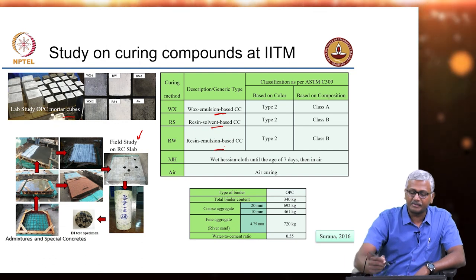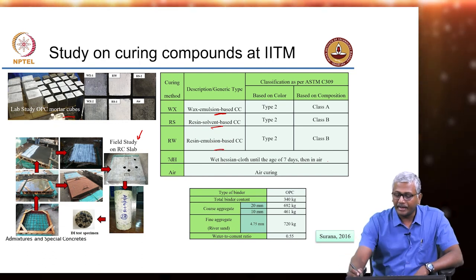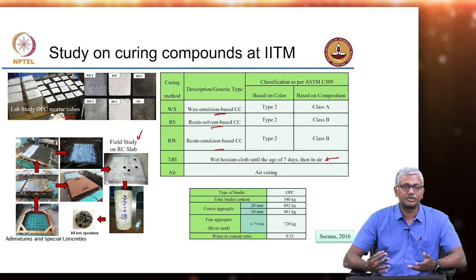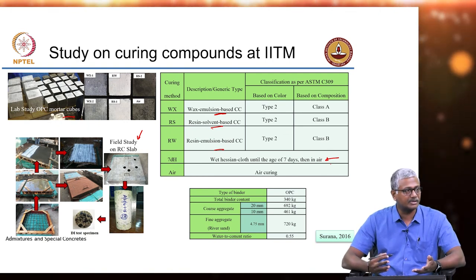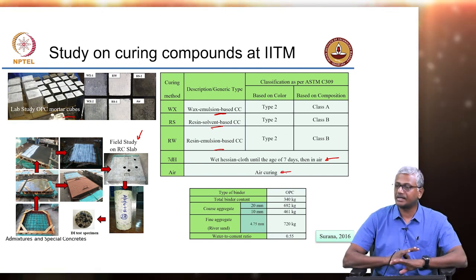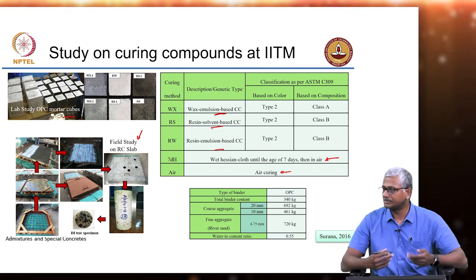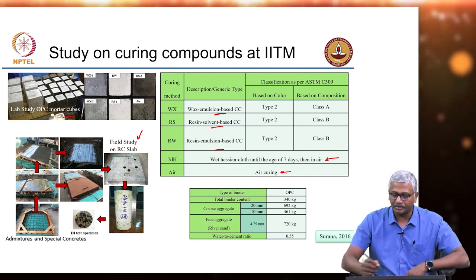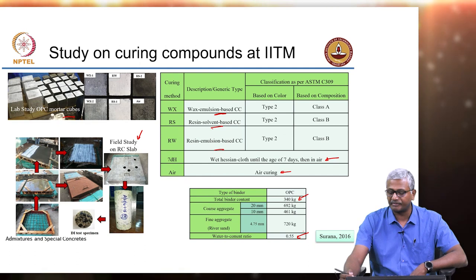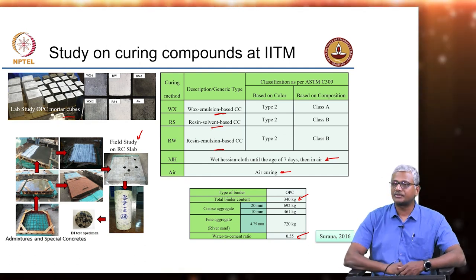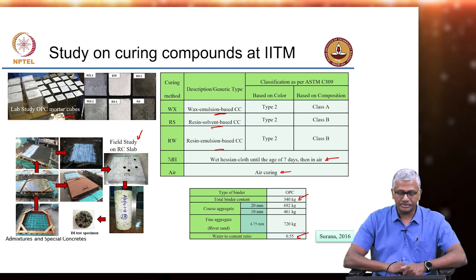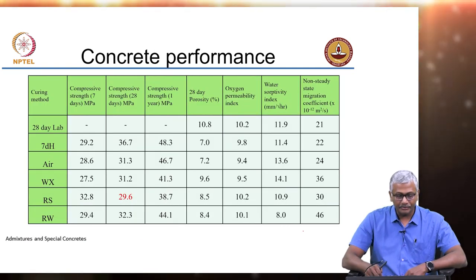The different types of curing compounds used were wax emulsion-based, resin solvent-based, and resin emulsion-based. We also had site-based curing — that is, 7 days with wet Hessian cloth then exposed to air — and also just air curing right after finishing. The water-binder ratio was 0.55 with a binder content of 340 kg, so the expected strength was about 25 to 30 MPa.